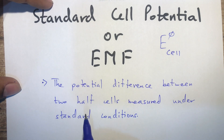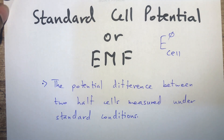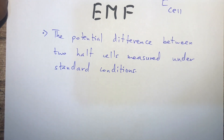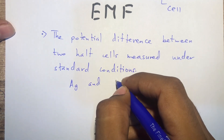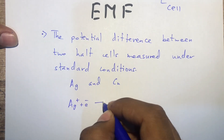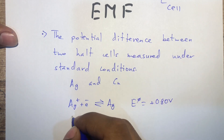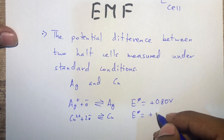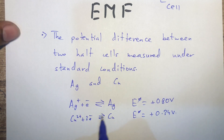The standard cell potential is represented by E°cell. It is also called the EMF. The definition is: the potential difference between the two half cells measured under standard conditions. For example, let's take a cell made up of silver and copper. The equation for silver is: Ag⁺ + e⁻ → Ag, with an SCP value of +0.80 V. For copper: Cu²⁺ + 2e⁻ → Cu, with an SCP value of +0.34 V.